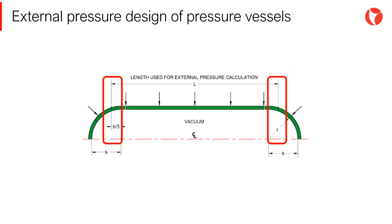In a pressure vessel under external pressure, support lines are the parts of the vessel counteracting the actions of the external pressure. Depending on the geometry and moment of inertia of the different elements — heads, cones, transitions, etc. — these lines will be located in different places.